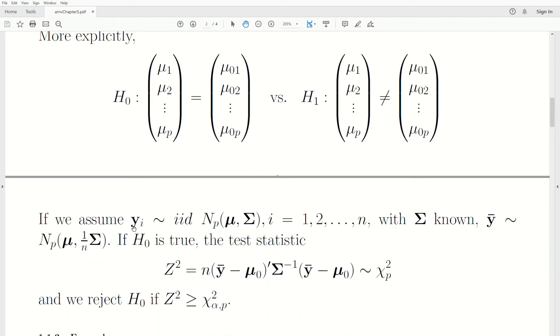Now let's assume that our vectors are IID, multivariate normal, mean vector μ, covariance matrix Σ. They're IID, so independent, identically distributed. And we know the covariance matrix. So the sampling distribution of the sample mean vector is multivariate normal with mean vector μ and covariance matrix Σ divided by n, or 1 over n times Σ.